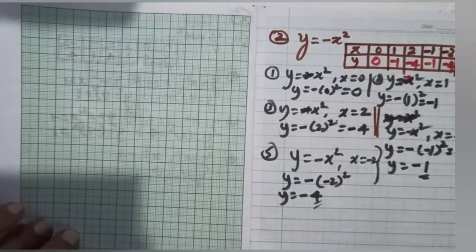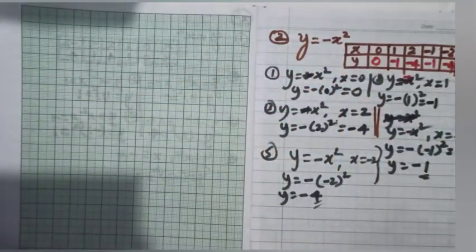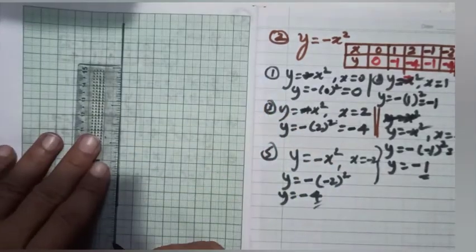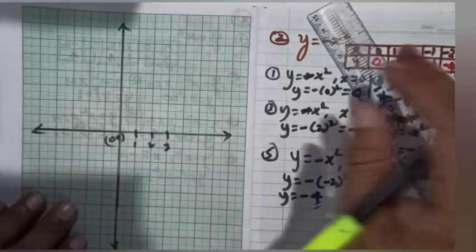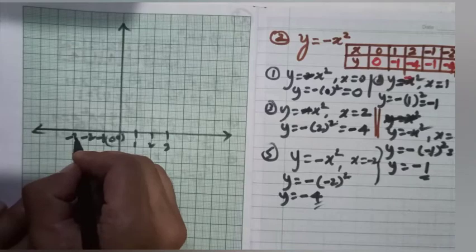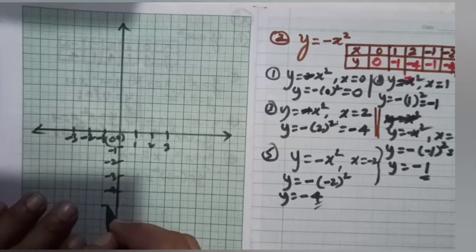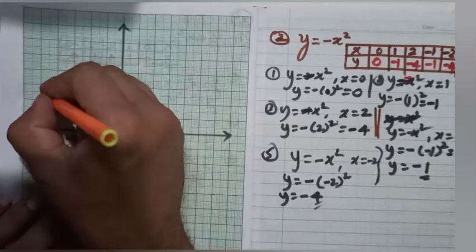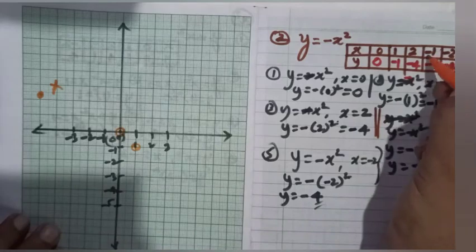Let's plot this graph. Since all y values are negative, the graph goes below the x-axis. On the x-axis we mark 1, 2, 3, minus 1, minus 2, minus 3. On the y-axis below we mark minus 1, minus 2, minus 3, minus 4, minus 5. For x equal to 0 we mark the origin. For x equal to 1 we get minus 1, going down. For x equal to 2 we reach minus 4.